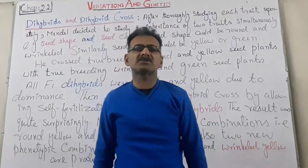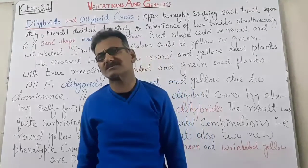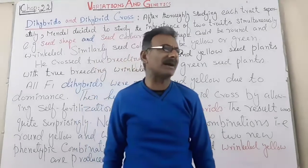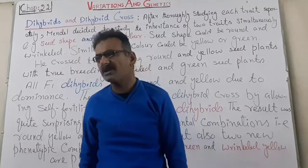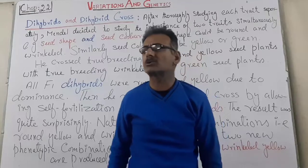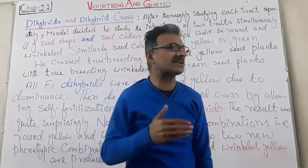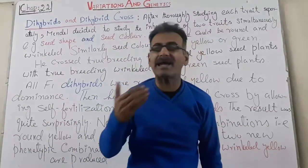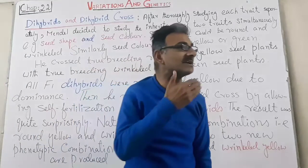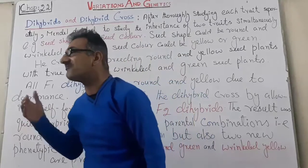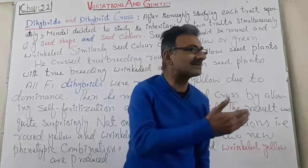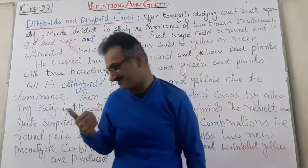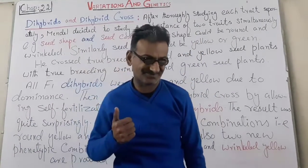In the name of Allah the gracious the most merciful. Good morning students. Last time we were discussing about monohybrid cross and Mendel's law of segregation. In this law we studied that the two coexisting alleles for each trait in an individual segregate from each other at meiosis, so that each gamete can receive only one of the two alleles, and they reunite at random fertilization when a zygote is formed.